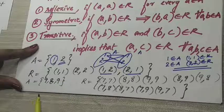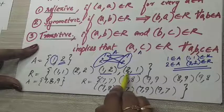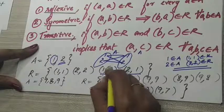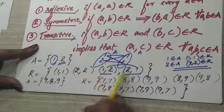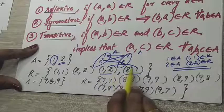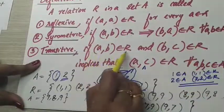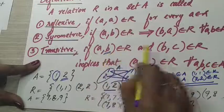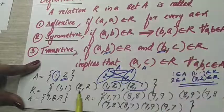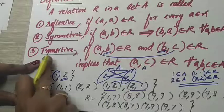Now transitive. Transitive means: if (1,2) belongs to the relation and (2,1) belongs to the relation, then (1,1) should belong to the relation — and (1,1) is there. In general: if (A,B) belongs to the relation and (B,C) belongs to the relation, then (A,C) should belong to the relation. Then we say it is transitive.